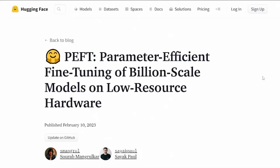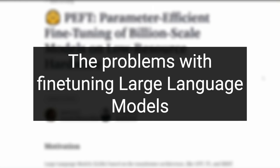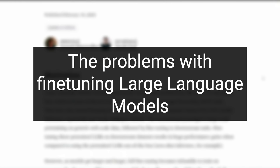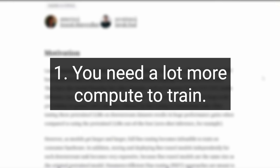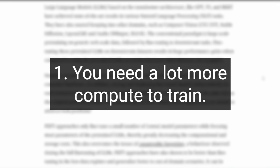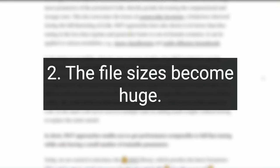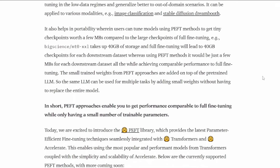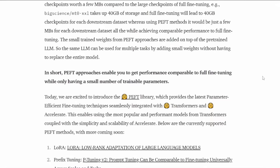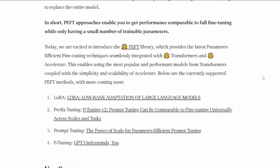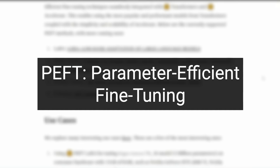The problem with training and fine-tuning large language models is that we end up with really big weights. This raises two main problems: first, you need a lot more compute to train, and as models get larger you need much bigger GPUs or multiple GPUs just to fine-tune them. Second, the file sizes become huge — the T5 XXL checkpoint is around 40 gigabytes, and 20 billion parameter models are getting bigger all the time.